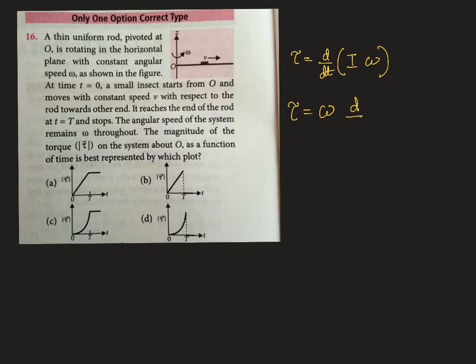So d/dt of I. What is I about the given axis? For the rod, I is capital M into L square by 3.